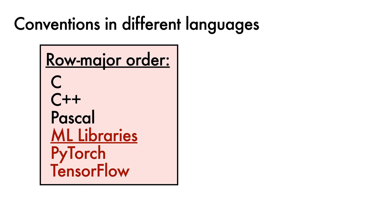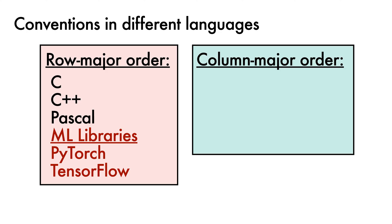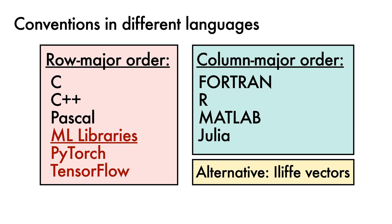There are also many languages that adopt column major ordering, including Fortran, R, MATLAB and Julia. Some languages, like Java, do not adopt either convention, and instead use alternative data structures for multi-dimensional arrays such as arrays of references to handle multiple dimensions. This is typically a more flexible, but slightly less efficient approach.